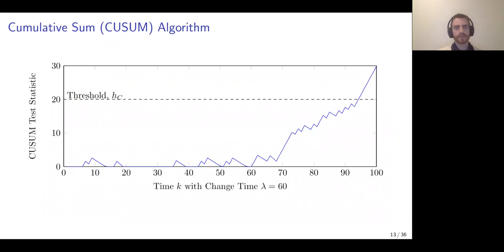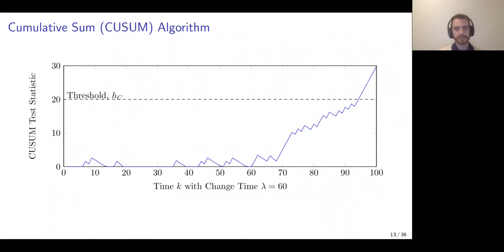Operationally, before a change the CUSUM test statistic remains close to zero, and then after a change — here at time 60 — the test statistic increases until it reaches threshold H, at which time a change is declared. The reason for the positive trend after a change is due to the log-likelihood ratio between the post-change distribution and the pre-change distribution.